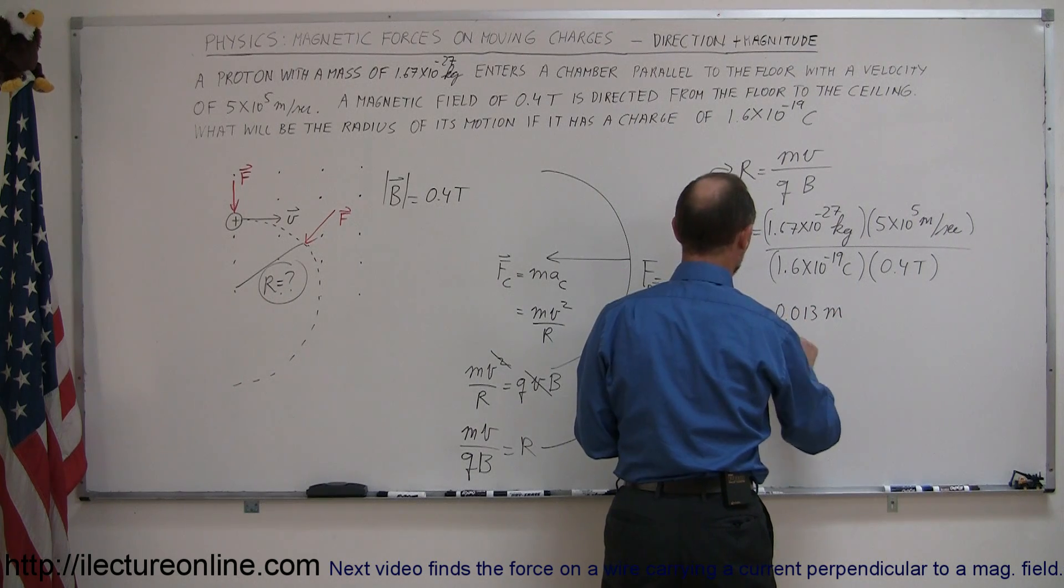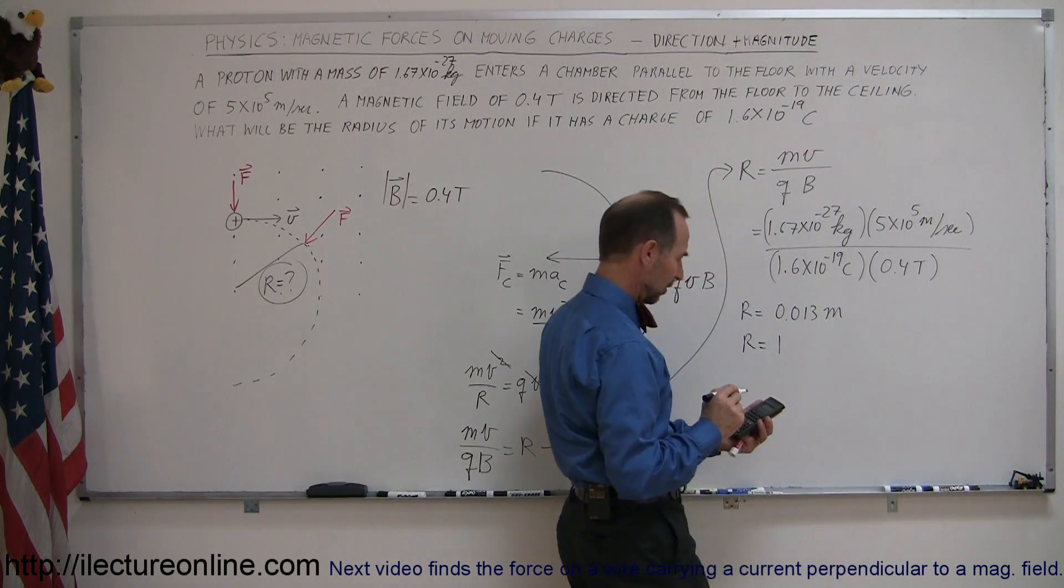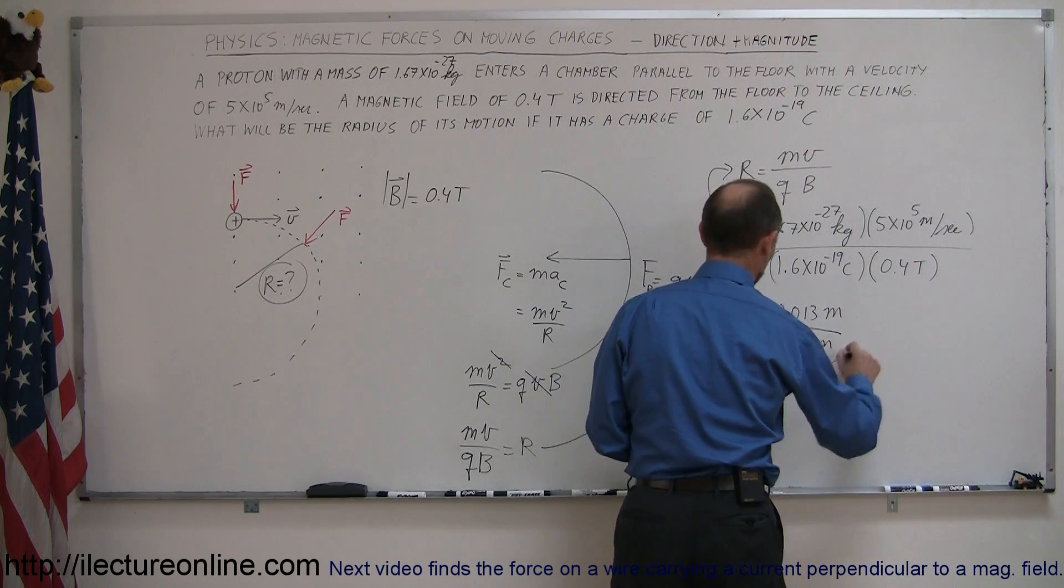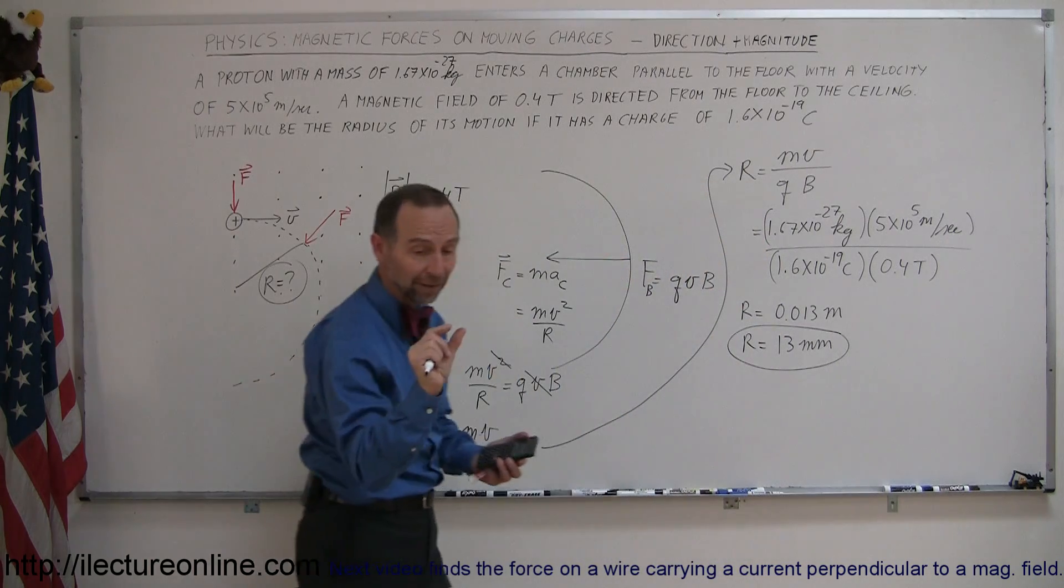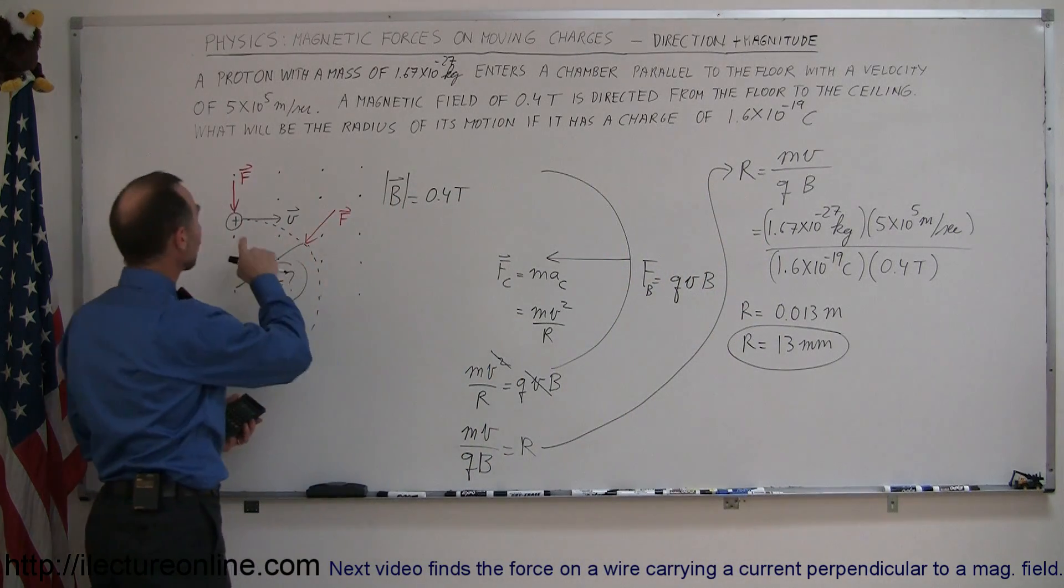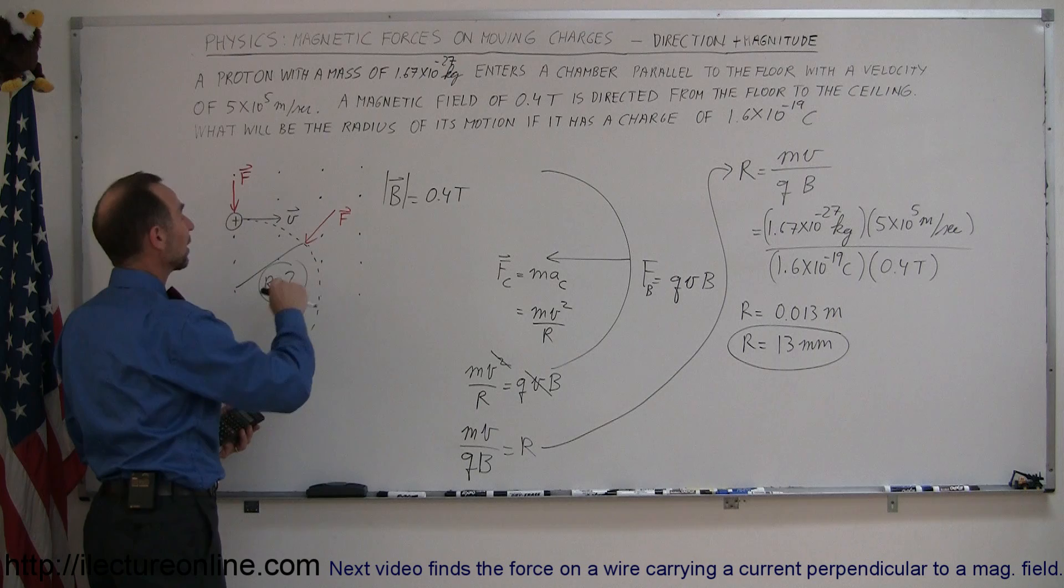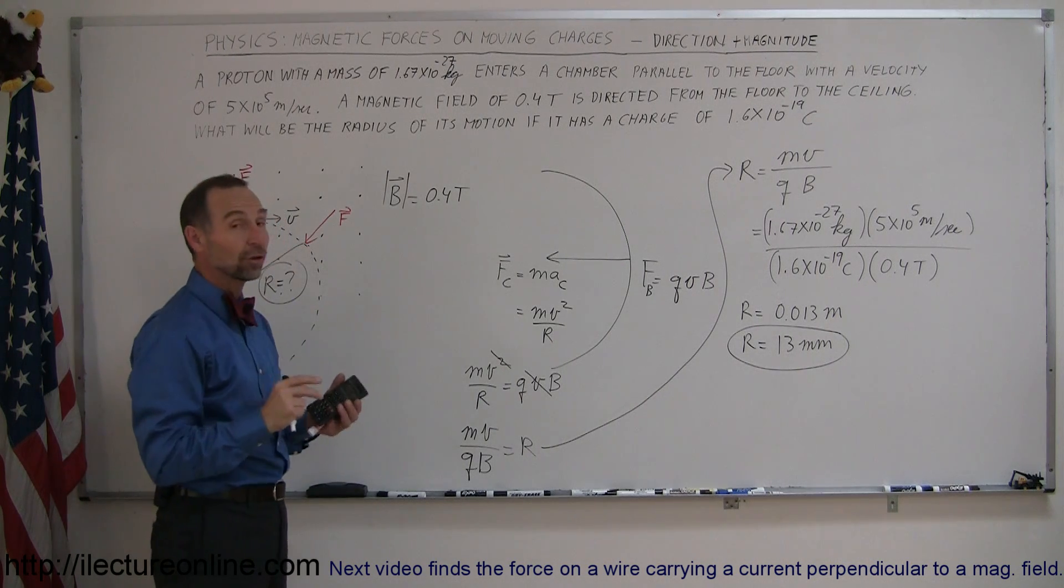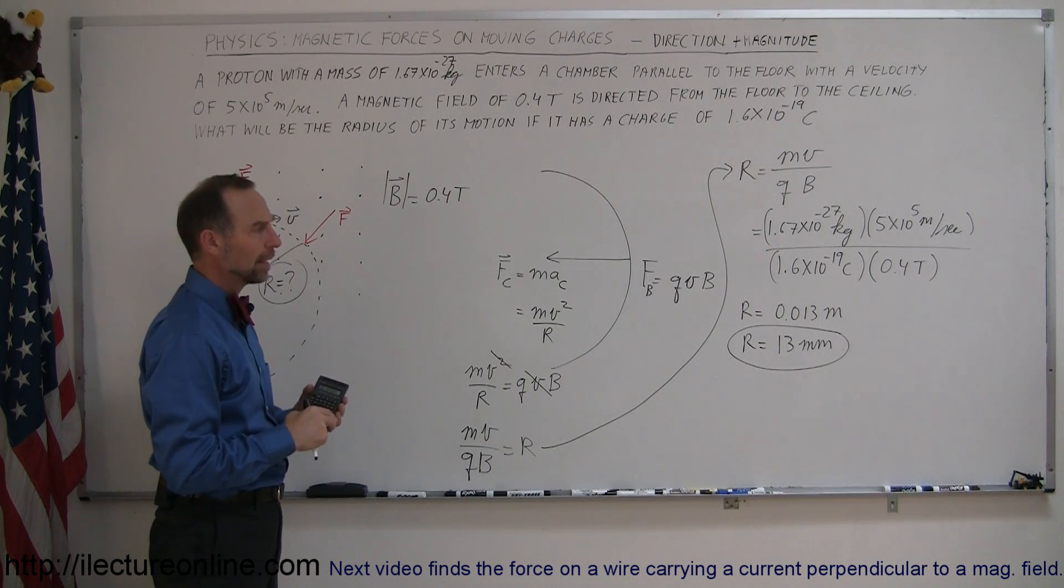So the radius is equal to 13, oh, let's see here. That's not 13 centimeters. That's 13 millimeters. That would be a pretty small radius, so about this big. So as soon as the proton enters the magnetic field, it'll start going around in very little circles. And that's the motion of a charged particle in a magnetic field.